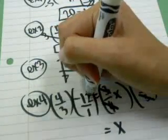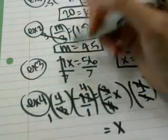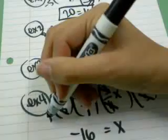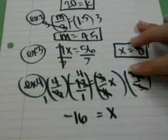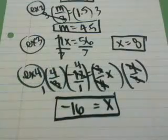On the left side, 3 and 12. 3 goes into 3 once. 3 goes into 12 four times. So I have 4 times negative 4, which is negative 16, over 1 times 1, which is 1. And anything over 1 is just itself. So my answer is x equals negative 16.